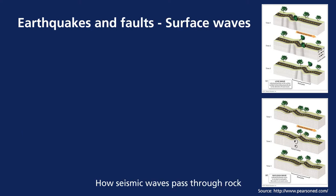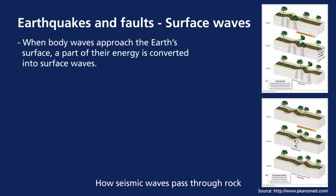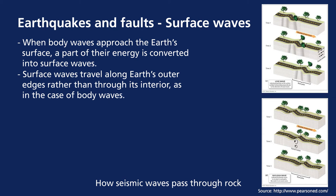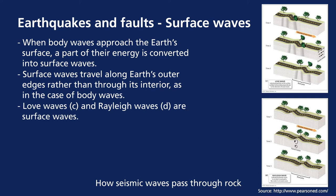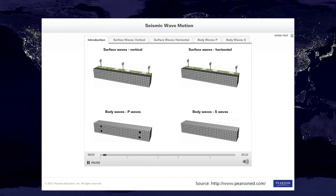We also have surface waves, of two different types. This is when energy is converted from underground to the surface. Love waves travel side to side like a snake moving along the ground. Rayleigh waves move more like water waves you would see at the beach. Earthquakes generate these two basic types of waves — surface waves that travel along Earth's surface and body waves that travel through the interior.